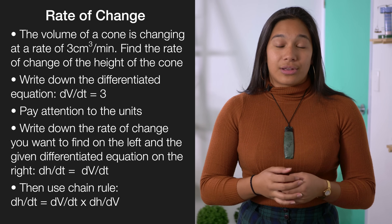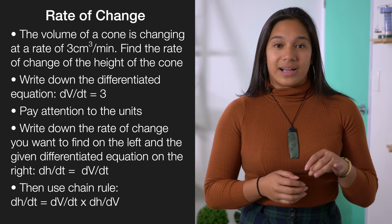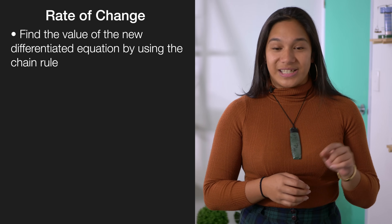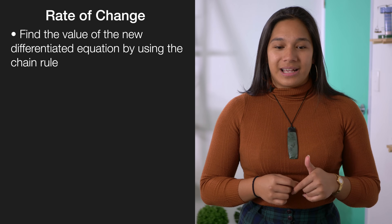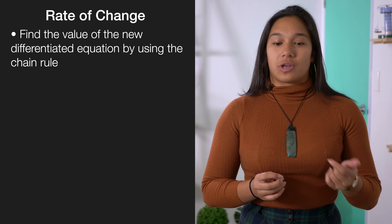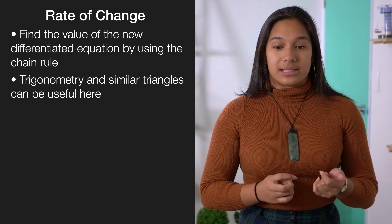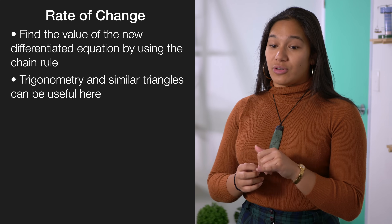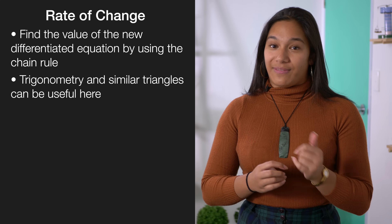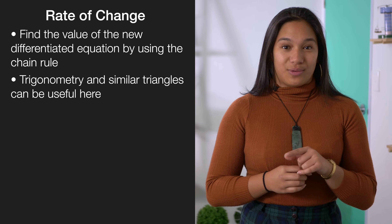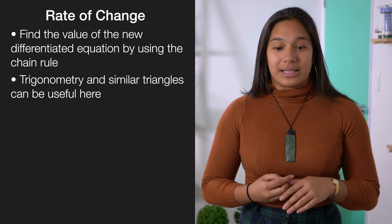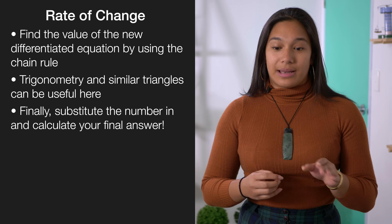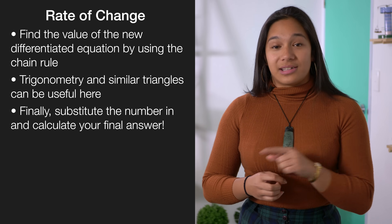Third, find dt over dh using the chain rule — you can use trigonometry and similar triangles if that's useful. Fourth, substitute that number in and solve for the final answer, and you're good to go.